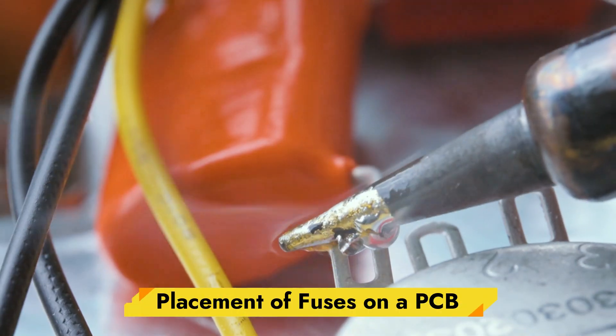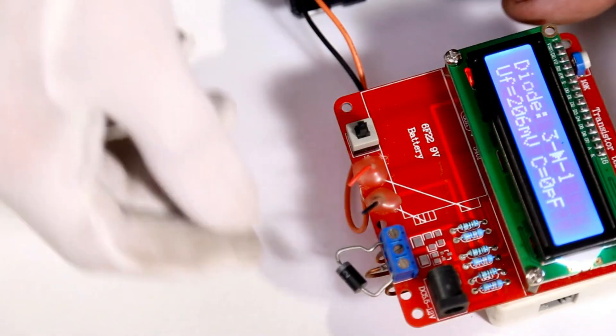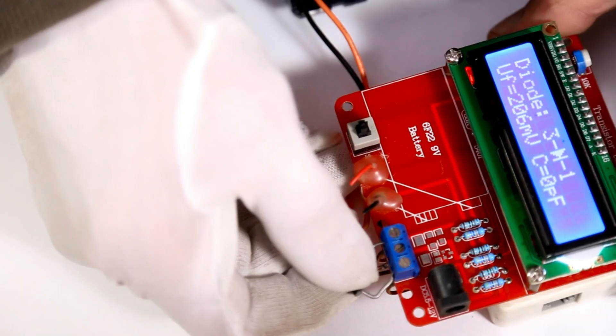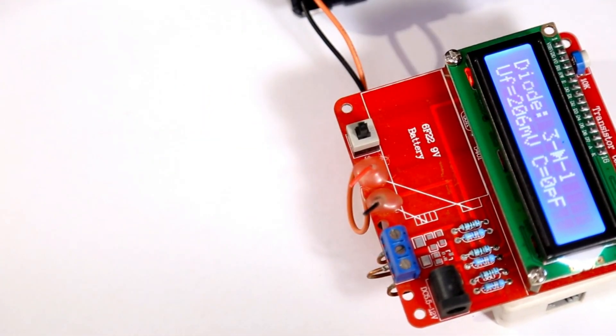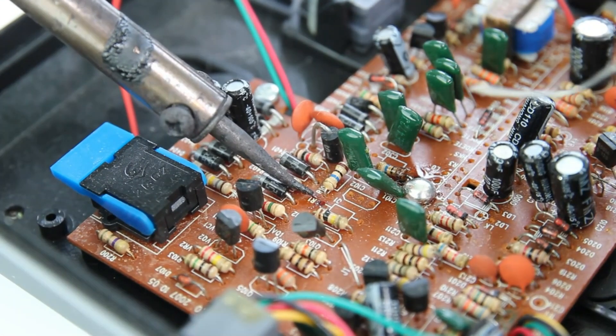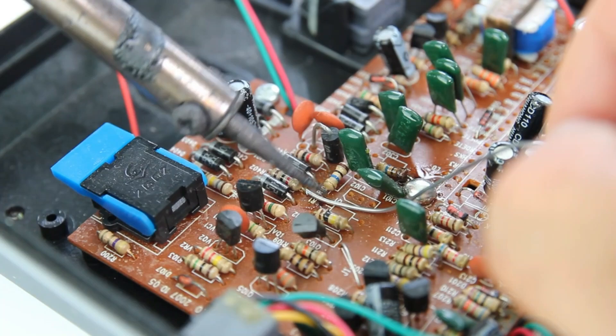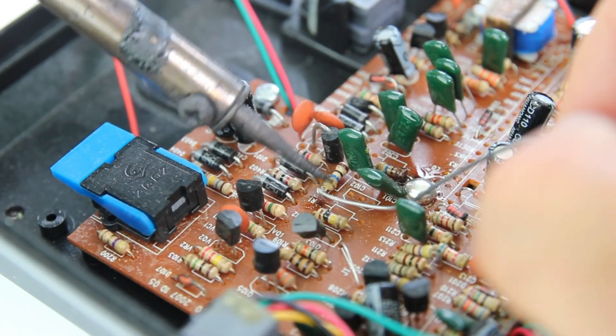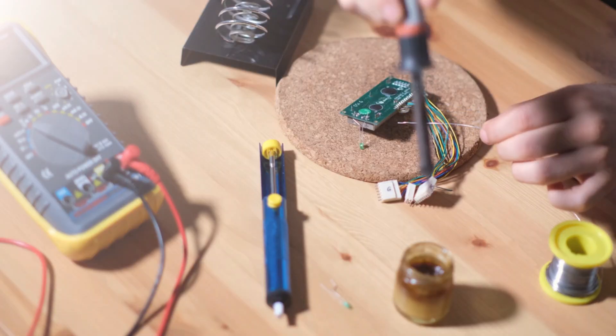Placement of fuses on a PCB. The placement of fuses on a PCB is crucial for ensuring effective circuit protection. Fuses should be placed in locations where they can easily disconnect the circuit in the event of an overcurrent condition. Here are some considerations for fuse placement.